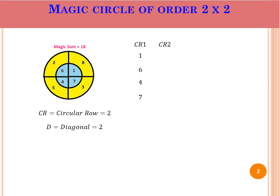The outer circular row contains 8, 2, 5, and 3. The first diagonal contains 8, 1, 4, 5. The second diagonal contains 2, 6, 7, 3. If you add each one, you will get the same number. That is the magic sum of this magic circle.